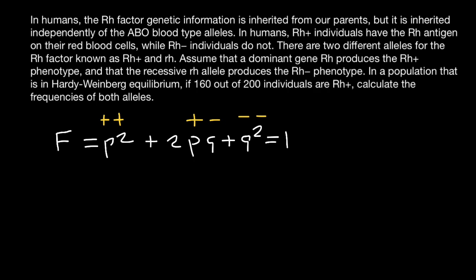So take a look. These two genotypes would make one phenotypic group, which is going to be the Rh positive blood group. And this genotype is going to make another phenotypic group, which is going to be the Rh negative blood group.